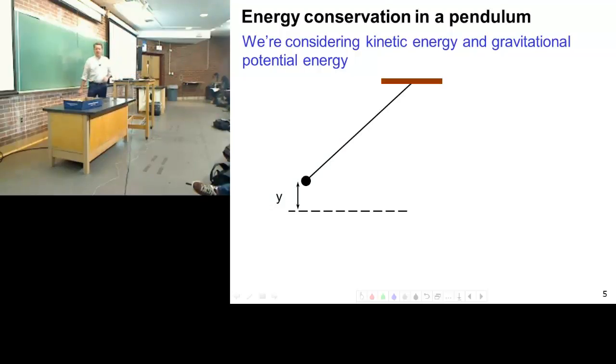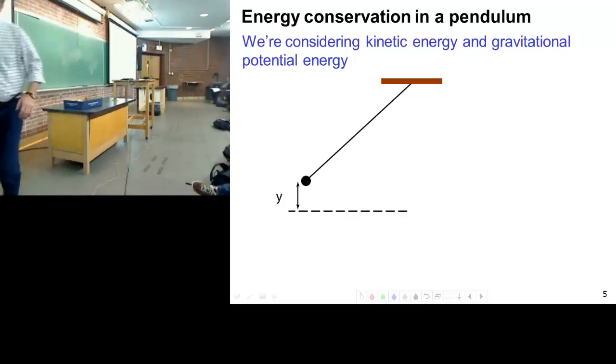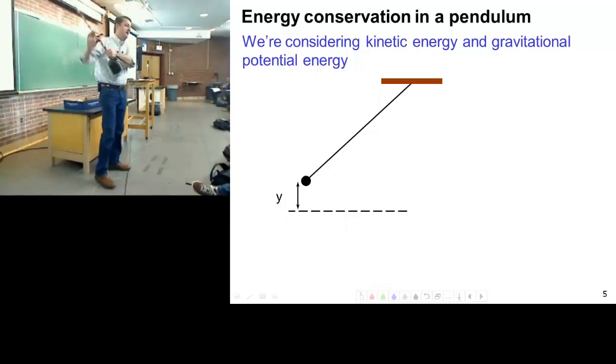I take the pendulum and I swing it out to some starting position. Here it is, swung out here. What is the initial energy state of the pendulum right there? If I take a pendulum, here it is. I swing it out to here. What's the initial state?